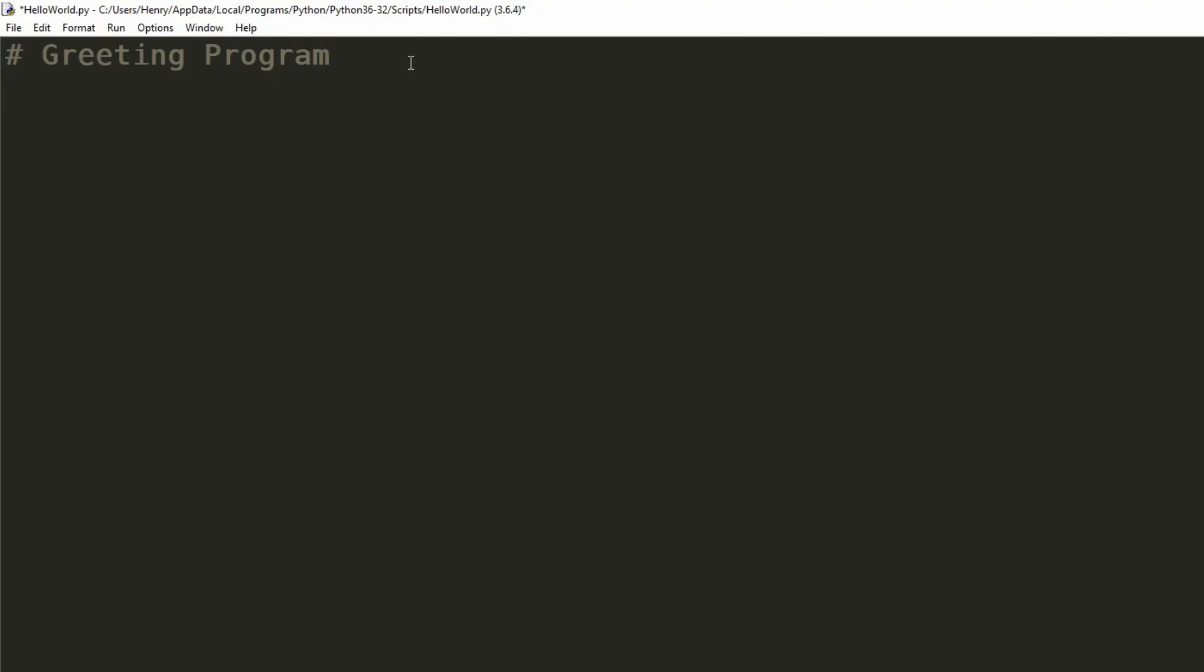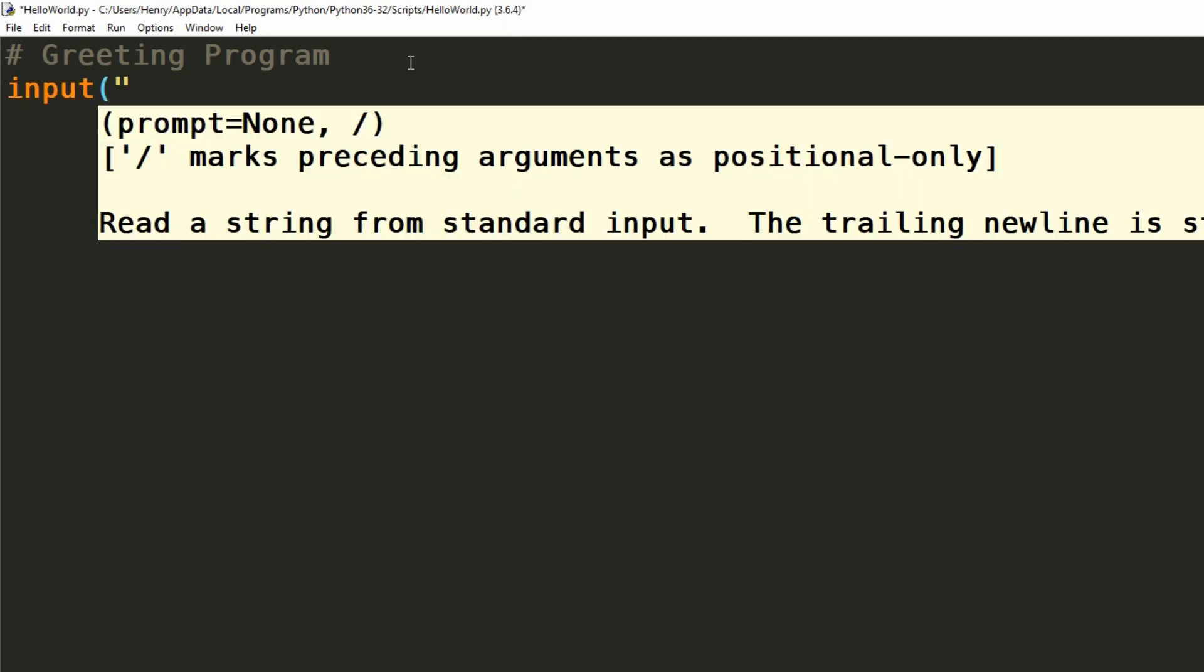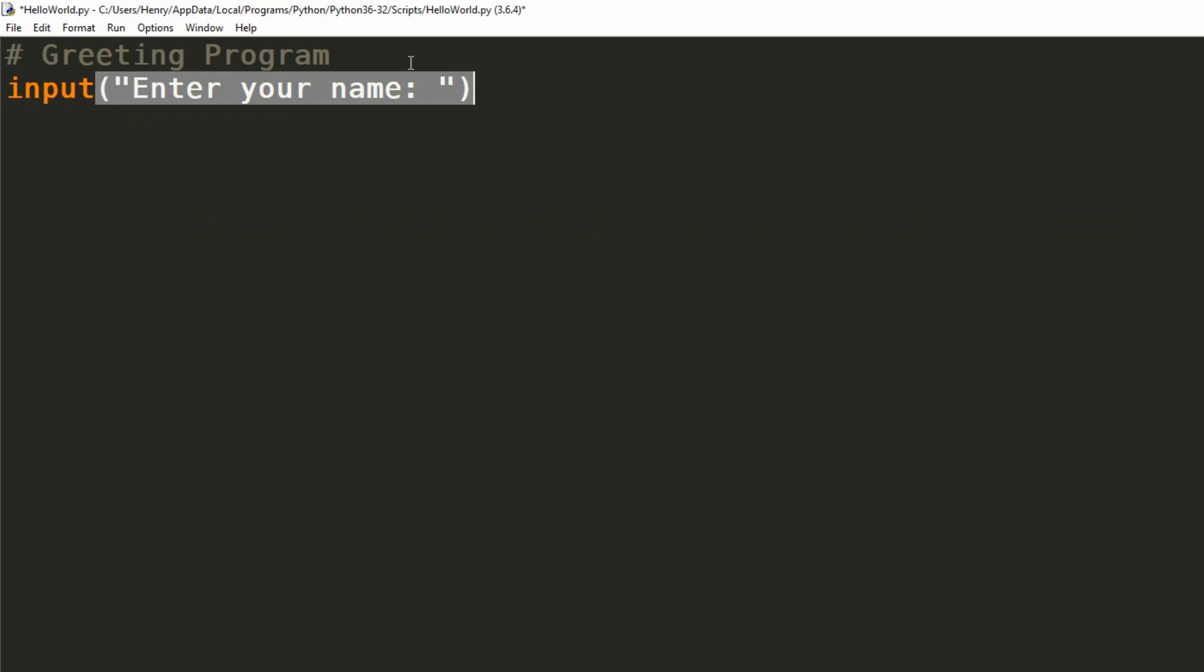Now, the first thing we'll want to do in this program is ask the user for their name, and we can do that using the input statement that we looked at before. Now, one thing that we didn't look at before was storing data into a variable from this input statement. In order to do this, we create our variable as we've done before, and then follow it with an equals operator, but then we can follow it with the input command. What happens here is whatever the user types in will then be passed into our variable.